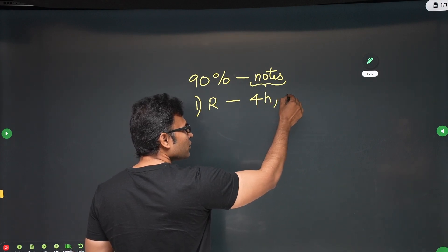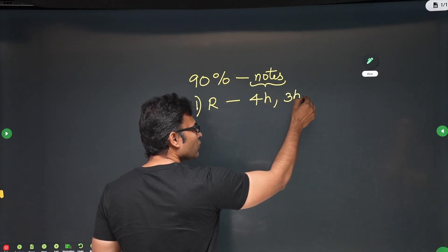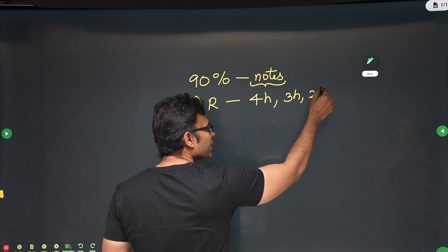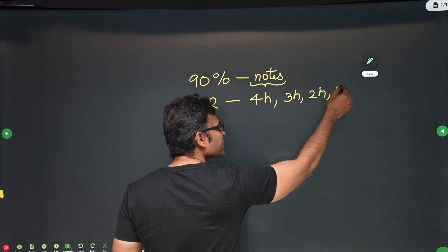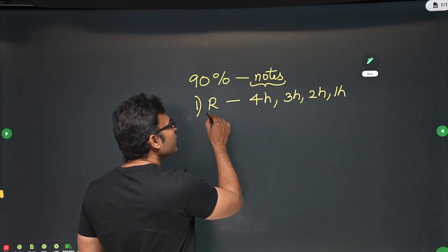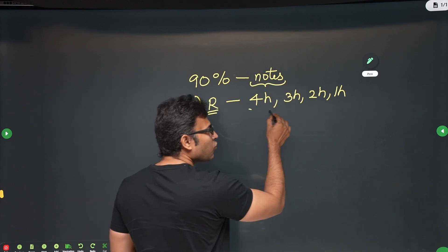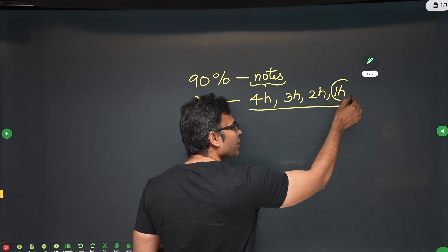For the second time when you revise, it will take 3 hours. For the third time when you revise, it will take 2 hours. For the fourth time you revise, it will take 1 hour. Every subject, you revise for 4 times, until your revision time becomes 1 hour.